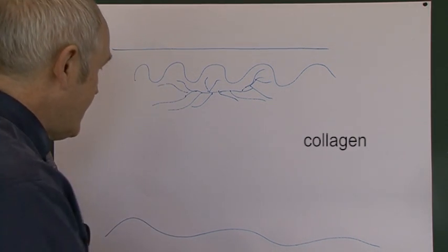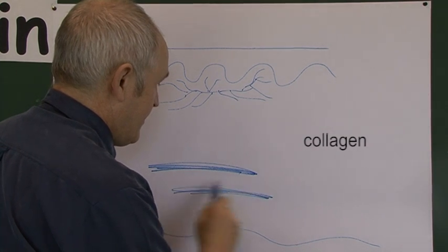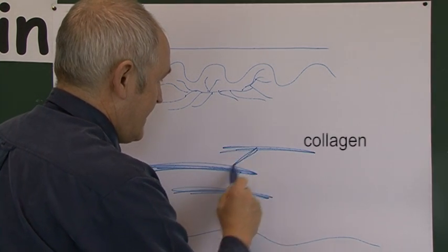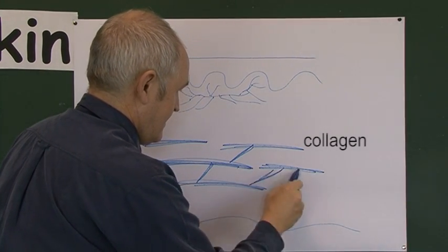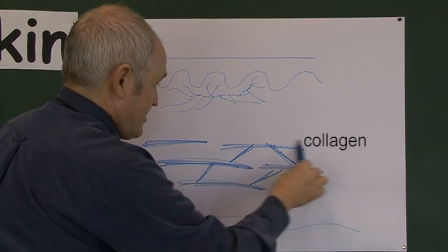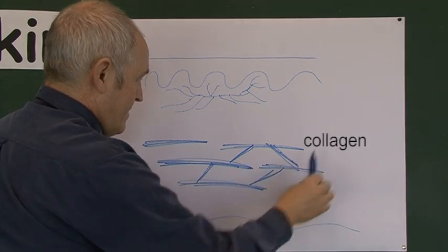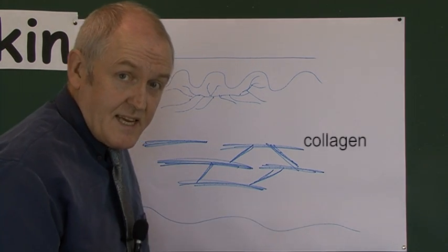But deeper down, the collagen fibers are much thicker and they're joined together. Now most of the collagen fibers actually run in one direction, parallel to the surface of the body, but they are interconnected.